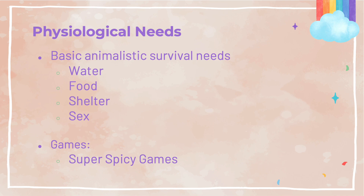We start off with physiological needs. Humans are first and foremost animals at our core, and if desperate enough, we are all capable of coming back to our animalistic ways. The core needs to our survival as an individual and to our species are water, food, shelter, and sex. The basic premise of this need is that if our own lives are not in any danger, we can move on to the next level of the hierarchy of needs. Games that touch on physiological needs could be those super spicy games you find on Steam or online.